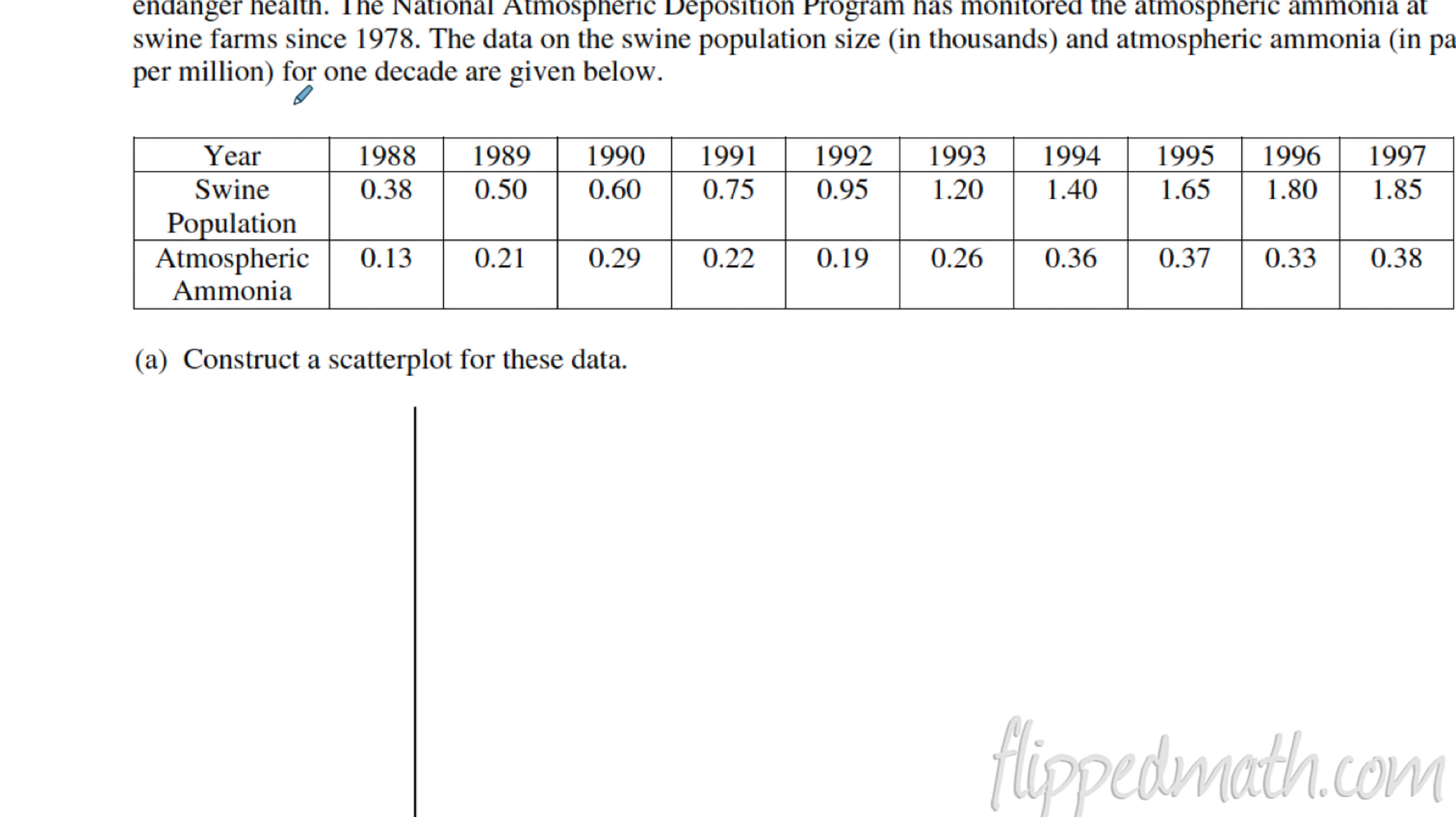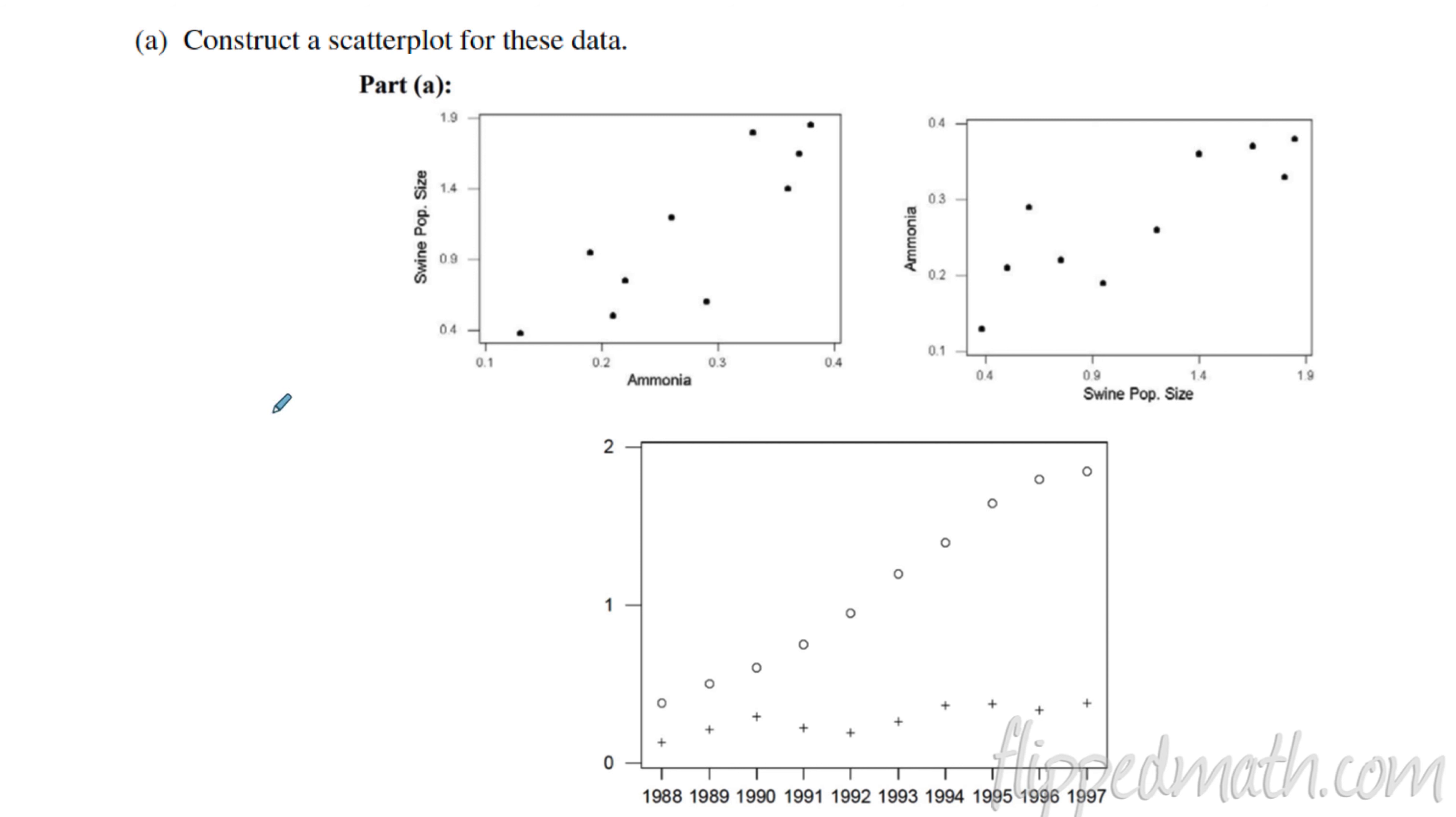As you go to construct a scatterplot, remember scatterplots include two variables. You have an explanatory variable that's on the bottom here, and you have a response variable, which is on the y-axis. We have three rows of numbers here, so you need to decide how to best set up the scatterplot. My advice is always to look for if there is one variable that you believe causes a change in the other. Or another word to say it is, does one variable depend on the other variable? Does it respond to it in some way?